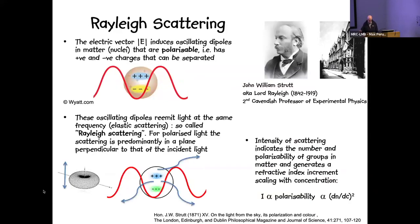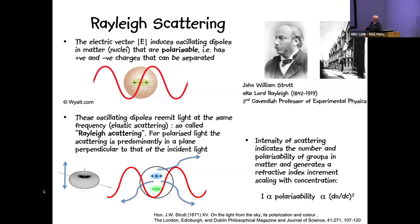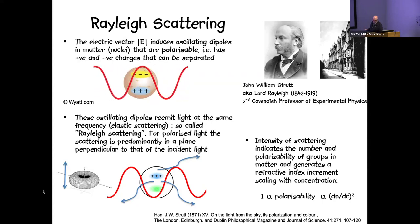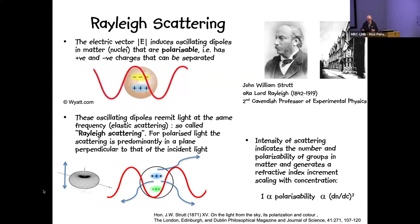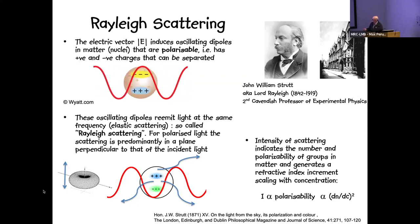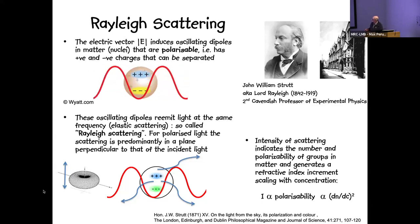The next Cavendish professor of physics was John Strutt, also known as Lord Rayleigh. He determined that the reason you get scattering is that the electric vector in incident light induces oscillating dipoles in matter where there are nuclei that are polarizable — they can be separated and have positive and negative charges. These oscillating dipoles re-emit light at the same wavelength and frequency: so-called elastic or Rayleigh scattering.